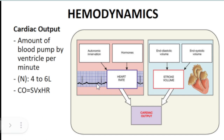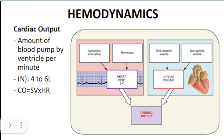Stroke volume is a component of cardiac output. Cardiac output (CO) is the amount of blood pumped by the heart per minute, calculated as: CO = Stroke Volume × Heart Rate. The normal value is 4 to 6 liters per minute. Since multiplication is used, they are directly proportional — any increase in heart rate or stroke volume leads to an increase in cardiac output, and any decrease leads to a decrease.